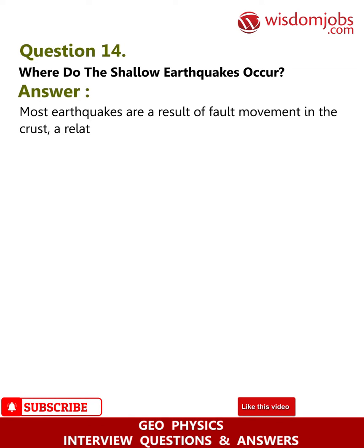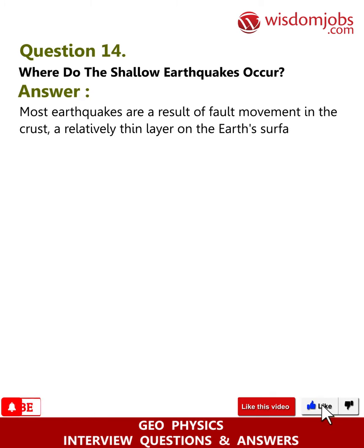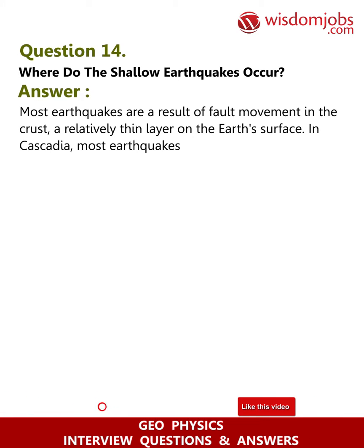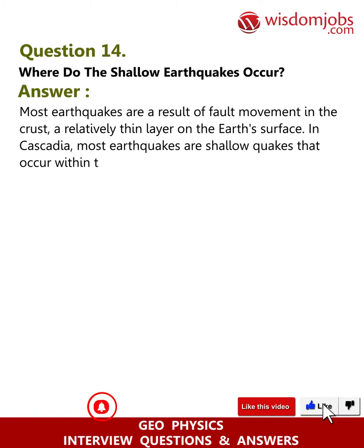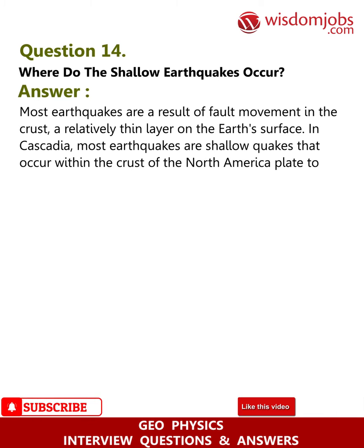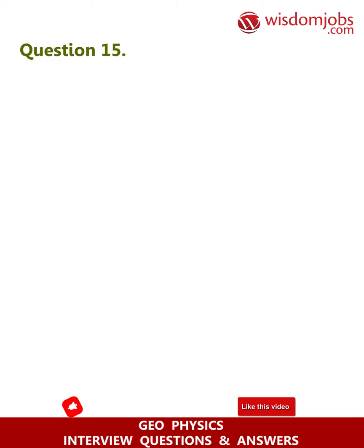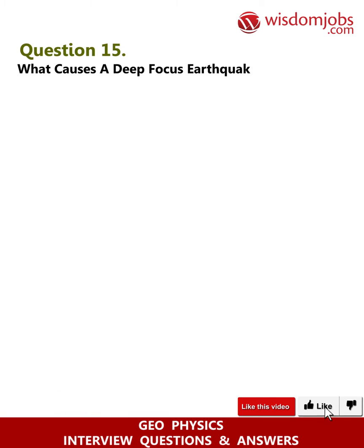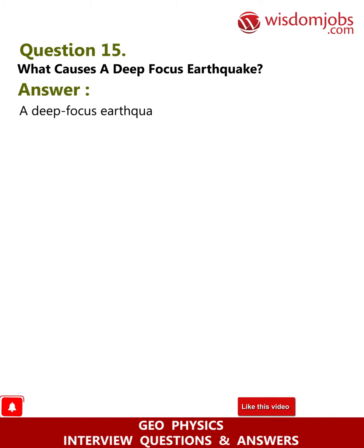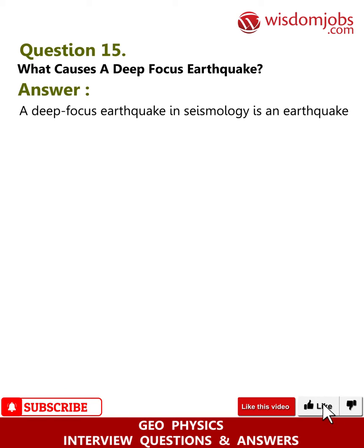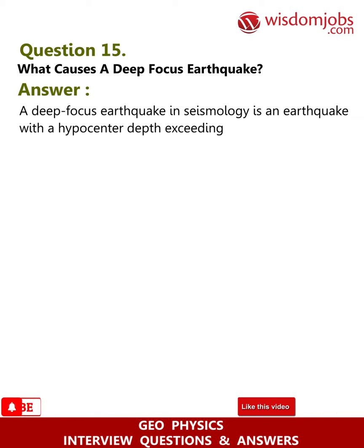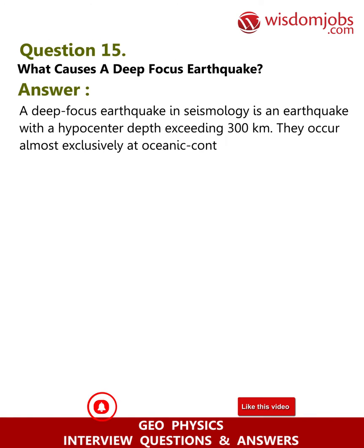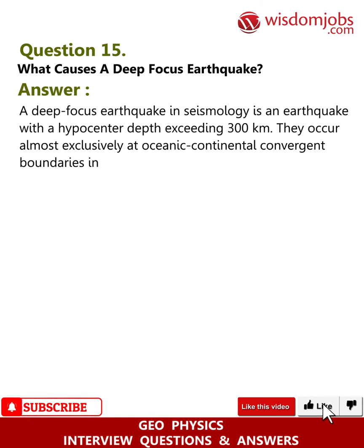Question 14: Where do shallow earthquakes occur? Answer: Most earthquakes result from fault movement in the crust. In Cascadia, most earthquakes are shallow quakes that occur within the crust of the North America plate to a depth of about 20 miles (35 km). Question 15: What causes a deep focus earthquake? Answer: A deep focus earthquake is an earthquake with a hypocenter depth exceeding 300 km. They occur almost exclusively at oceanic-continental convergent boundaries in association with subducted oceanic lithosphere.